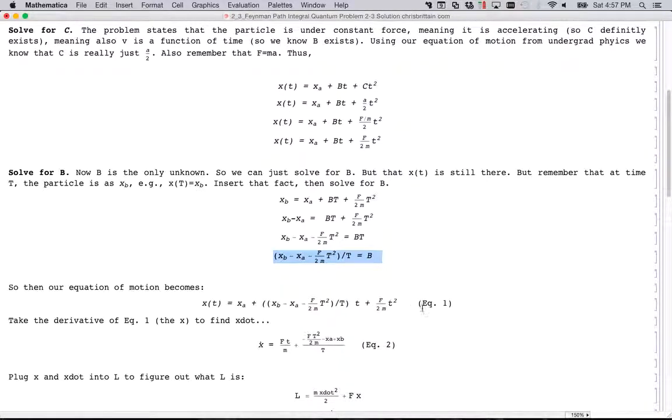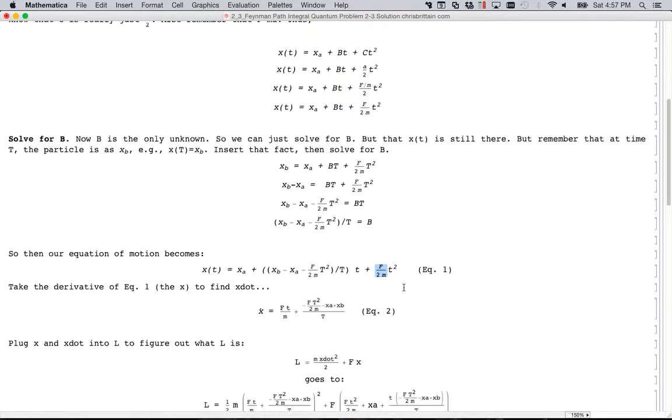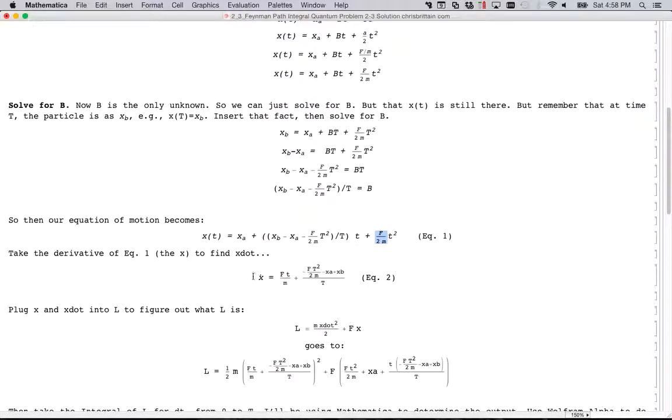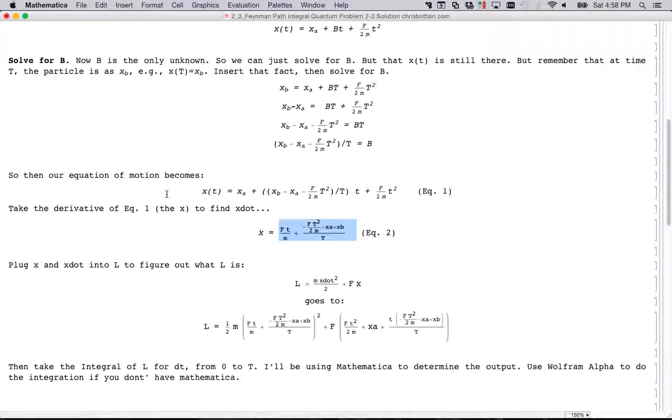So then our equation of motion, I just plug it into the x(t). So this is a, this is b, and then this is c. Right there. So I know one, and then to find the derivative, the x dot, because we need that for the Lagrangian, it asks for it. We just take the derivative of equation one. So if you take the derivative of it, I just use Mathematica to calculate it. It's this, so I have that.